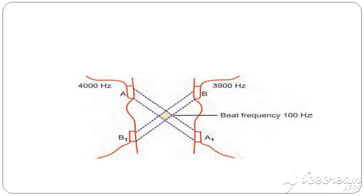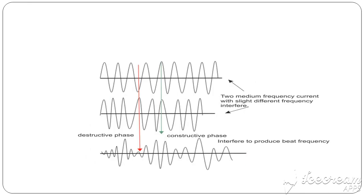So you can see here, there is a slight difference between the two medium frequencies - one is 4000 Hz and another one is 3900 Hz. So two with slight difference between the two medium frequencies interfere to produce beat frequency.